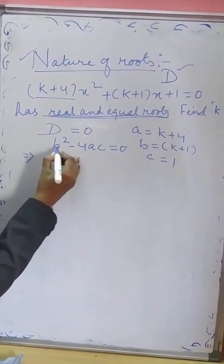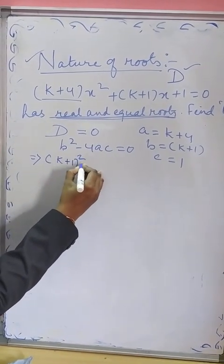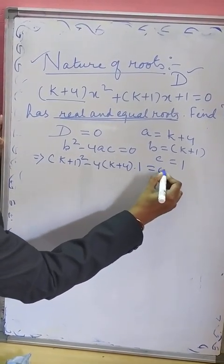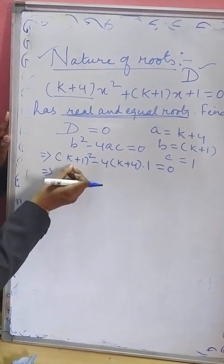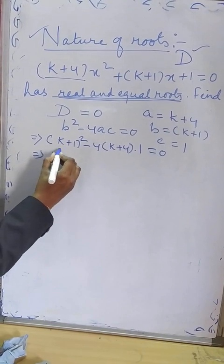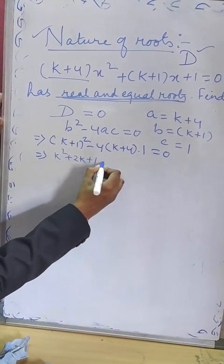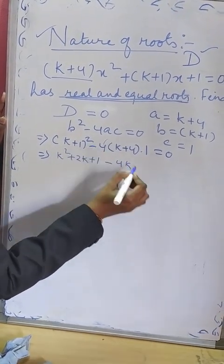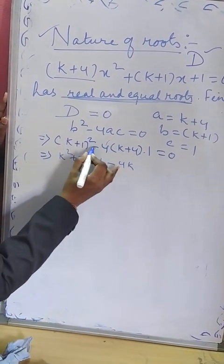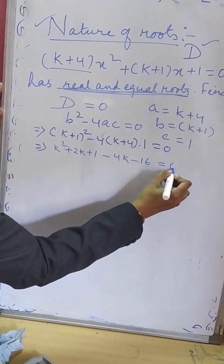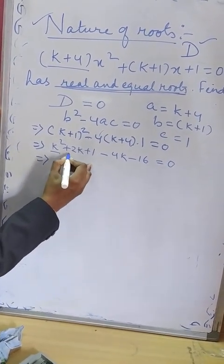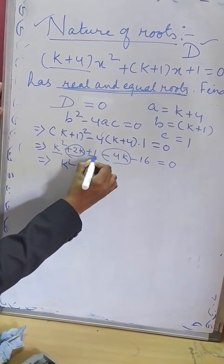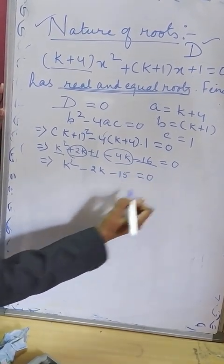Substituting in b² - 4ac = 0: (k+1)² - 4(k+4)(1) = 0. Expanding: k² + 2k + 1 - 4k - 16 = 0. Combining like terms: k² - 2k - 15 = 0.